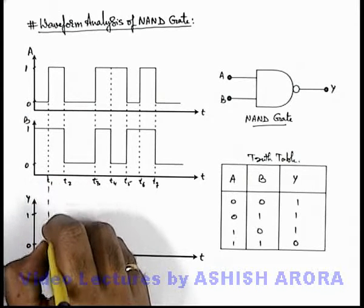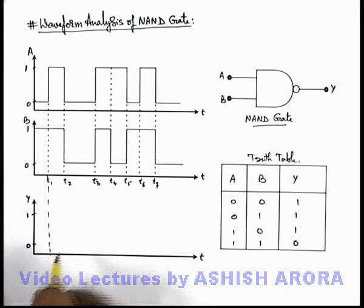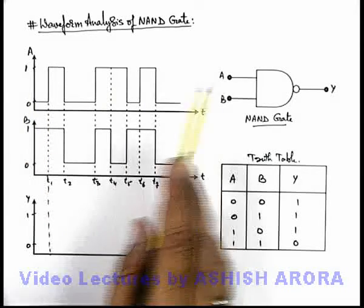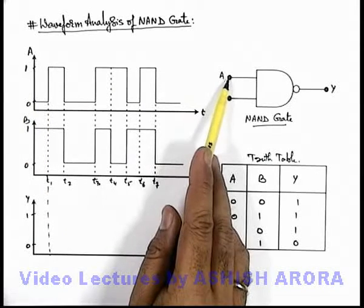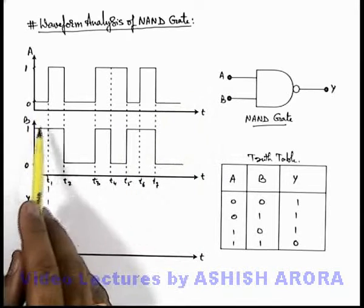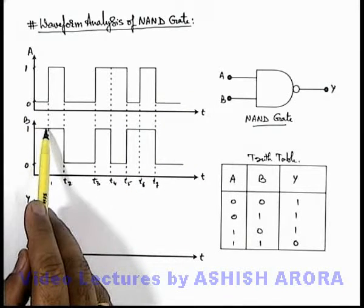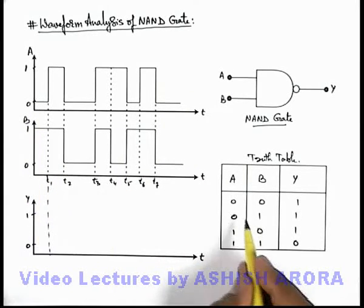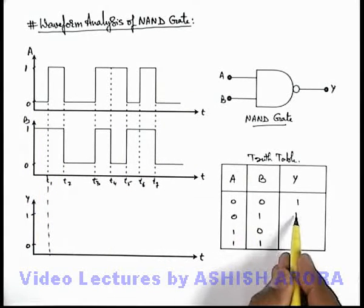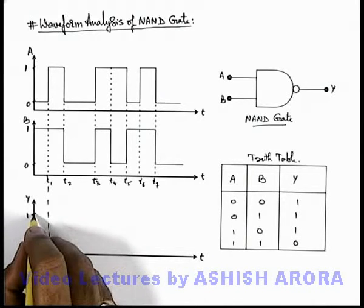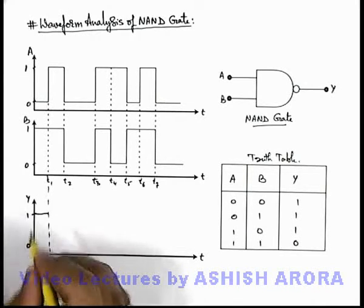Between time 0 to t1, you can see that the state of the signal at terminal A is 0 and that at terminal B is 1. So corresponding to input 0,1, the output is high — that is, state 1.